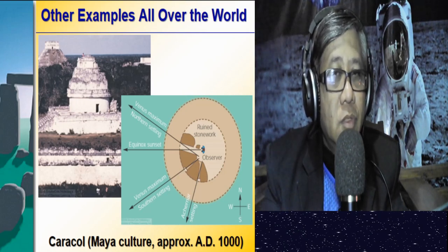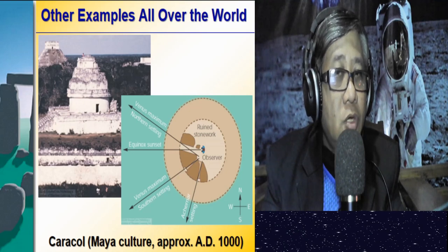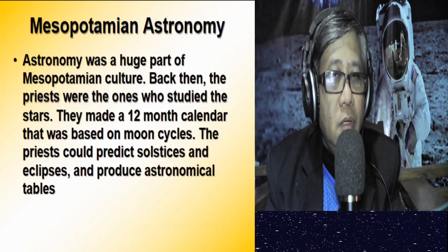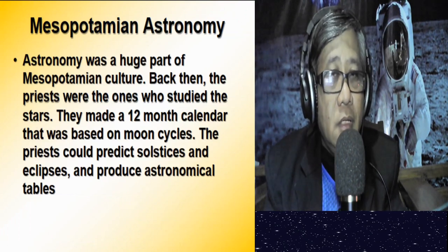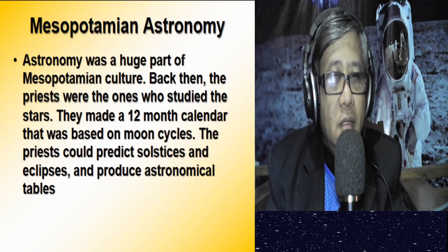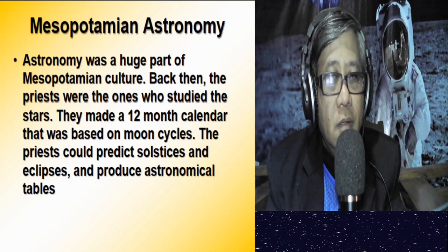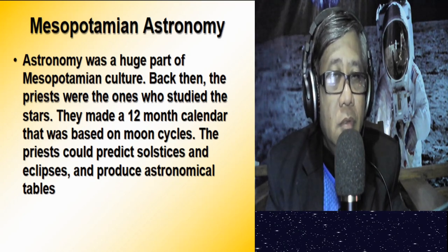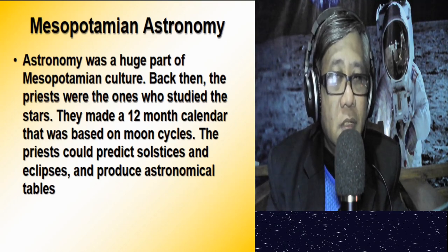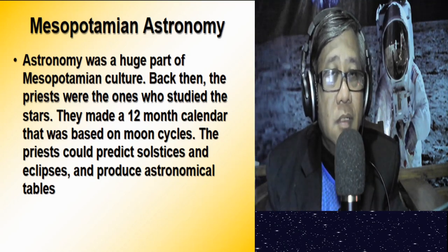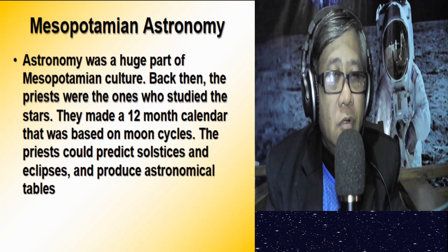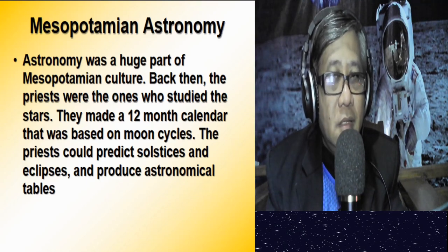The Mesopotamians also considered astronomy a huge part of their culture. It was the priests who studied the heavens, and with their knowledge of astronomy they came up with a 12-month calendar based on the movements of the moon. The Mesopotamian priests also predicted winter and summer solstices, predicted eclipses, and were able to compile astronomical tables and amass astronomical data.